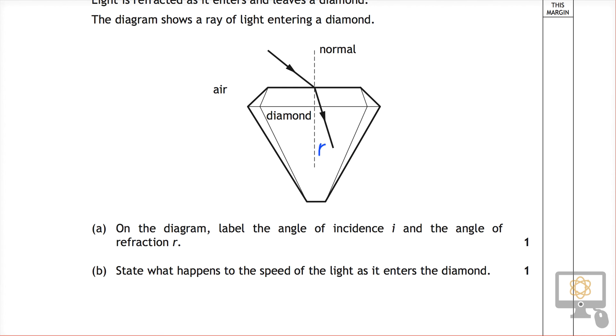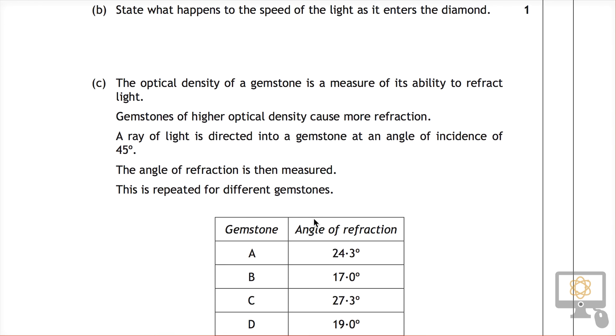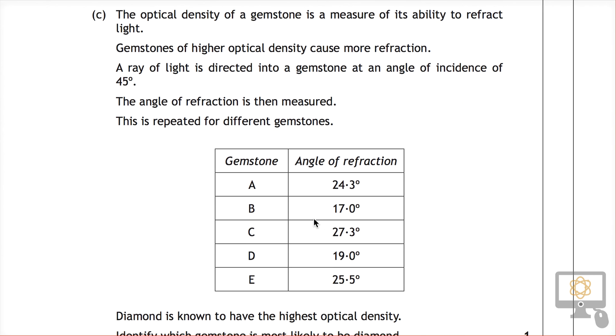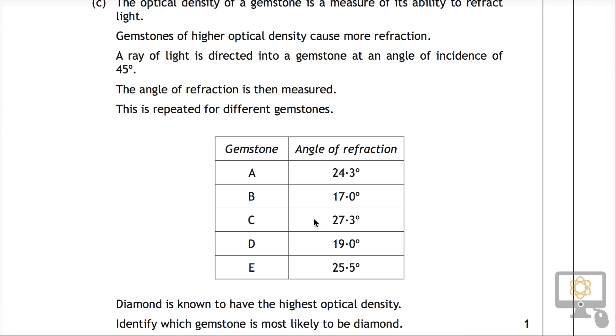So we can go back down and have a look at the rest of the table again. We can think of the one that's got the smallest one is this one right here, 17 degrees. Therefore, B is the gemstone which is most likely to be diamond because it's got the smallest angle of refraction.